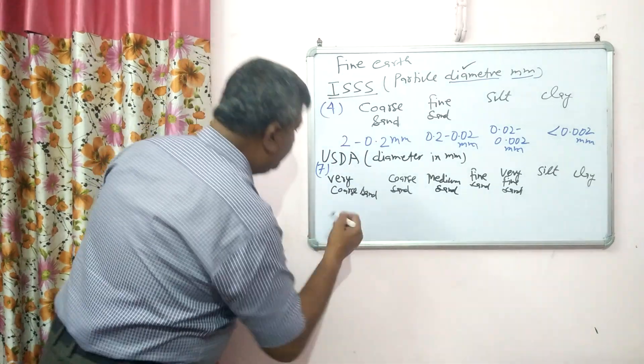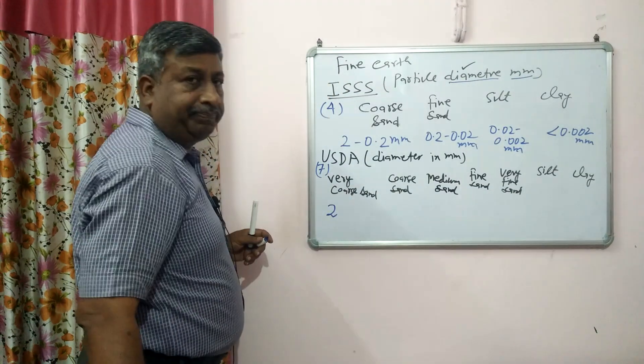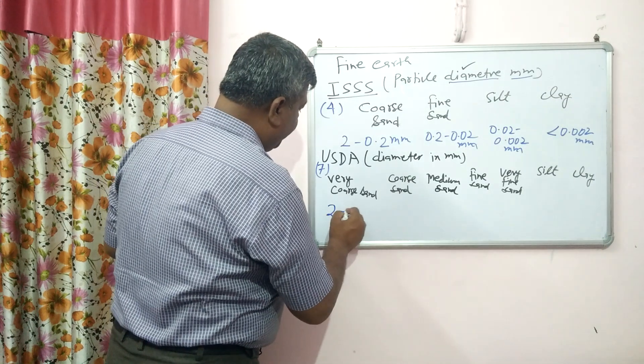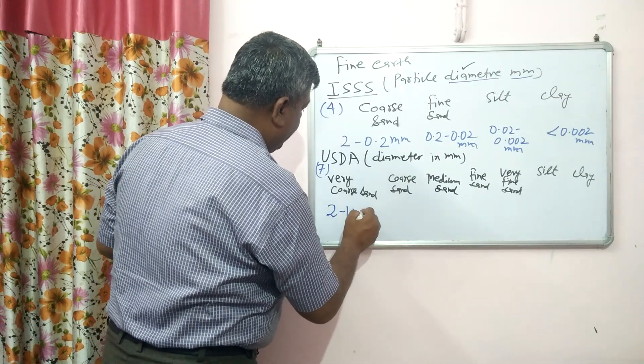In the USDA system, it also starts with 2 mm, but each division is reduced by half rather than by 10. So: 2 to 1 mm for very coarse sand.